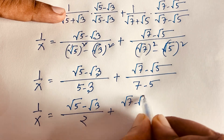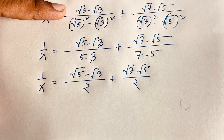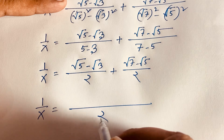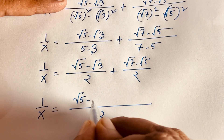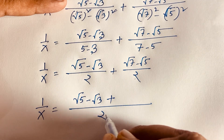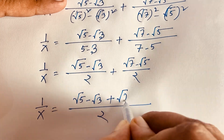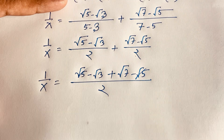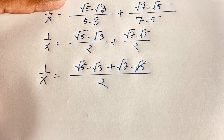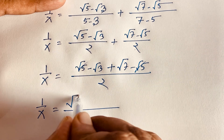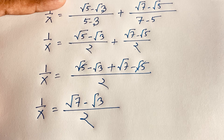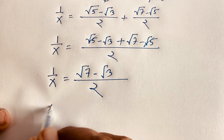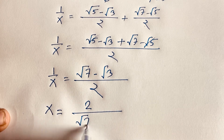The least common denominator is 2. Combining: 1 over x equals (square root 5 minus square root 3 plus square root 7 minus square root 5) over 2. Notice that square root 5 and negative square root 5 cancel out, leaving 1 over x equals (square root 7 minus square root 3) over 2. Therefore x equals 2 over (square root 7 minus square root 3).